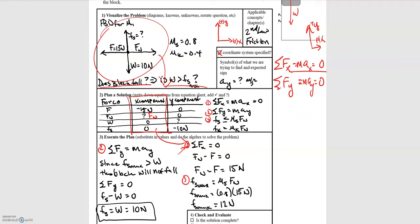After solving for the normal force, you can find the maximum static friction force, which is 12 newtons. Then you sum forces in the y direction, set it equal to zero, and determine what static frictional force is needed so the block does not fall — you find that it's 10 newtons. Since 10 newtons is less than the maximum static frictional force of 12 newtons, the block won't move, and the static frictional force equals 10 newtons, which is enough to oppose the weight pulling the block down.